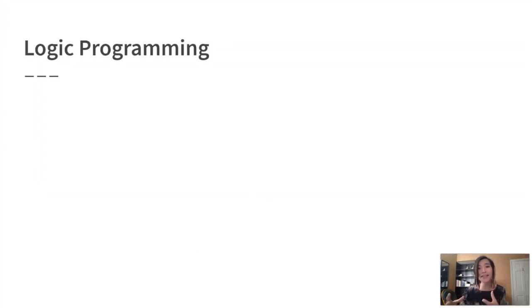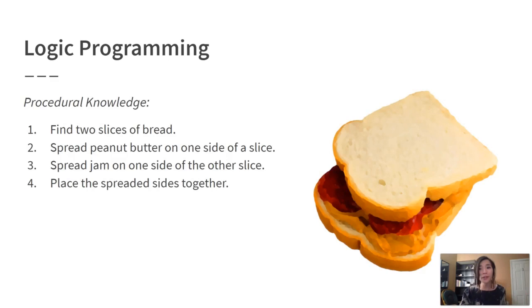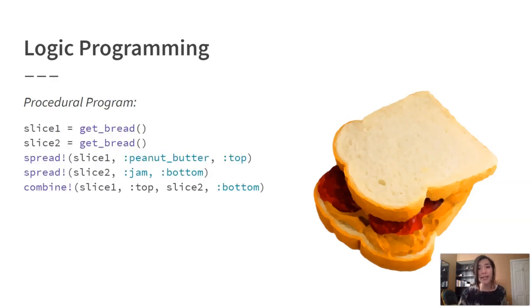Before I get into what Julog is, let me give a bit of background about logic programming and Prolog first. I'm going to do this by contrasting logic programs with a typical notion of what a computer program does, which is that it encodes procedural knowledge about the world. For example, how do you make a peanut butter and jam sandwich? You can express this as a series of basic steps or commands: find two slices of bread, spread peanut butter on one side, spread jam on the other, and place the sides together. This series of steps is effectively a procedural or imperative program, which you can imagine writing in this Julia-like code on the left.